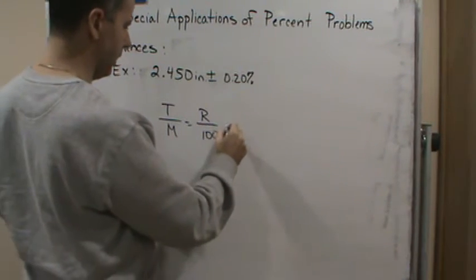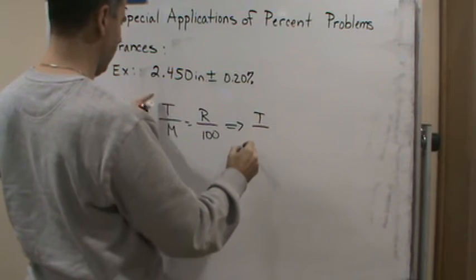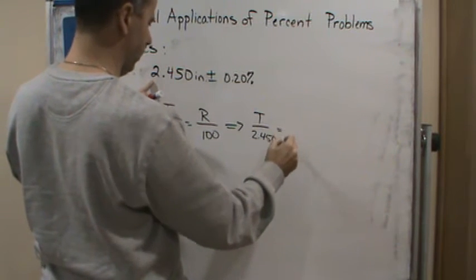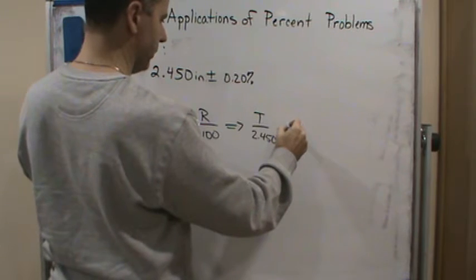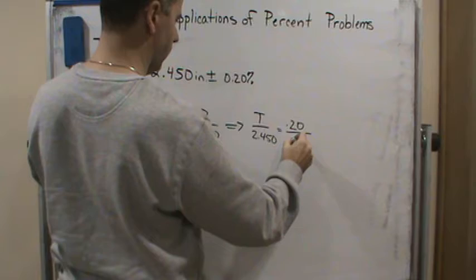So this is going to look like this. It's going to be T over 2.450 equals what? It's going to be 0.20 over 100.